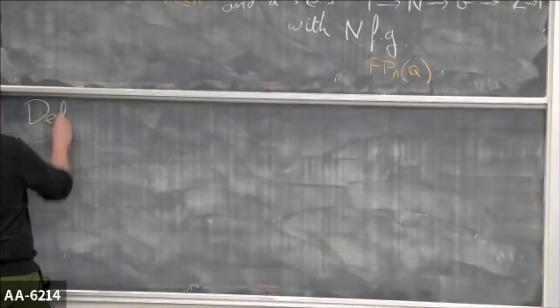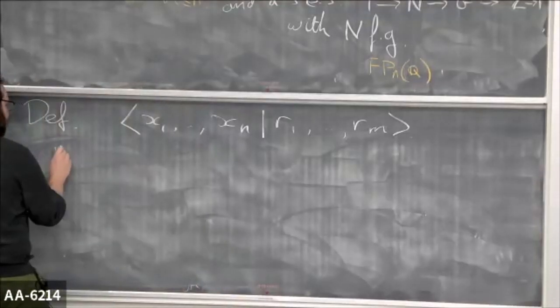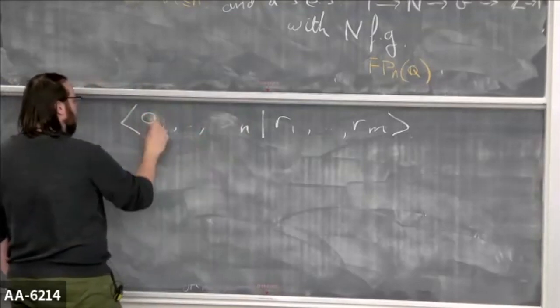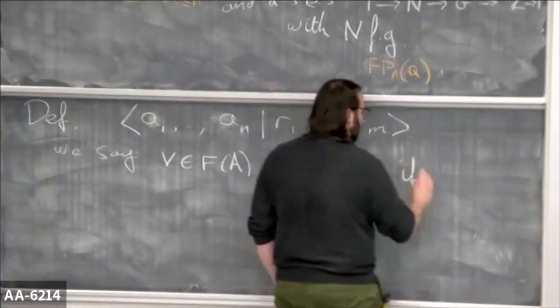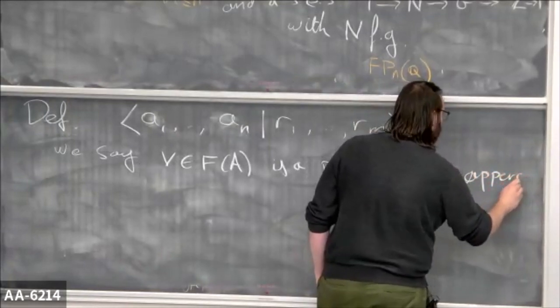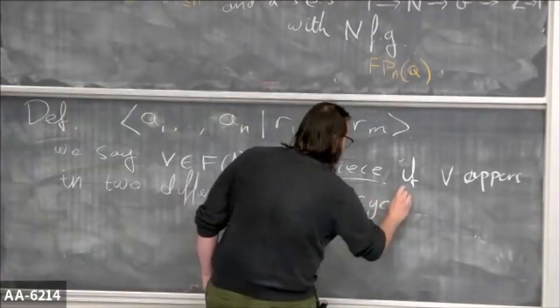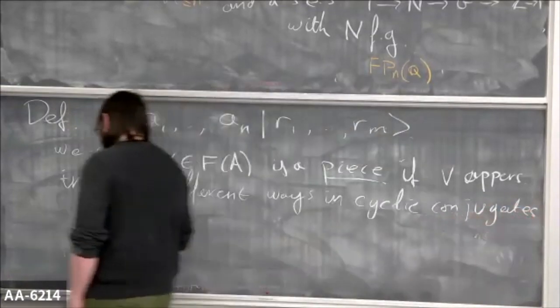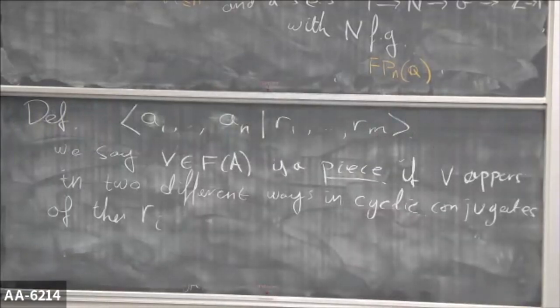So, a couple of definitions. Given a presentation on generators a₁ through aₙ with relations r₁ through rₘ, we say that a word V in the free group is a piece if V appears in two different ways in cyclic conjugates of the rᵢ. What this really means is: V is a subword that appears in two of your relations in intrinsically different ways. I have to be careful because relations aren't just words — really, they're attaching maps of circles, so they don't have a start and end. That's why I talk about cyclic conjugates. Let me just draw this picture: here's one relation rᵢ and here's another relation rⱼ, maybe they overlap, and this overlap is everything about overlaps of relations in the Cayley graph.